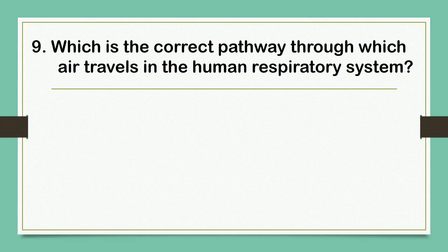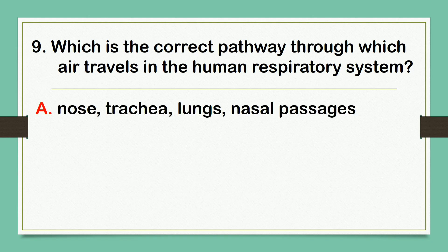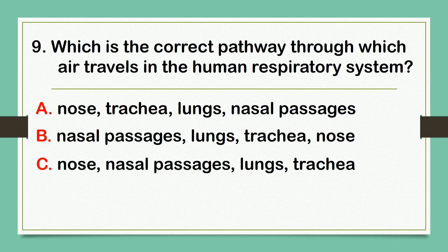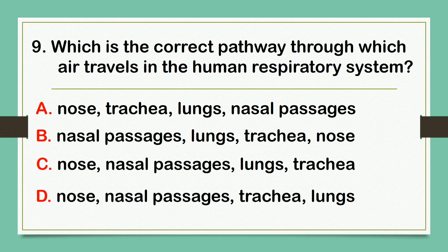Which is the correct pathway through which air travels in the human respiratory system? A. Nose, trachea, lungs, nasal passages. B. Nasal passages, lungs, trachea, nose. C. Nose, nasal passages, lungs, trachea. Or letter D. Nose, nasal passages, trachea, lungs. The correct answer is letter D: Nose, nasal passages, trachea, lungs.